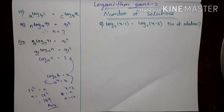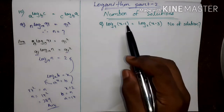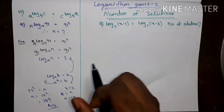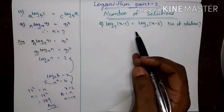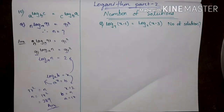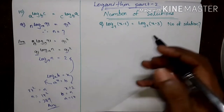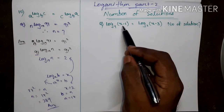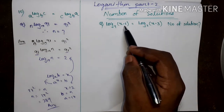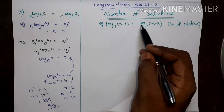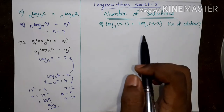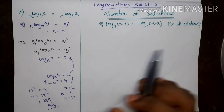Then go to the next concept: how we find the number of solutions from an equation. Find the number of solutions — which value of X satisfies the equation. Solve the equation, and that gives us the number of solutions.